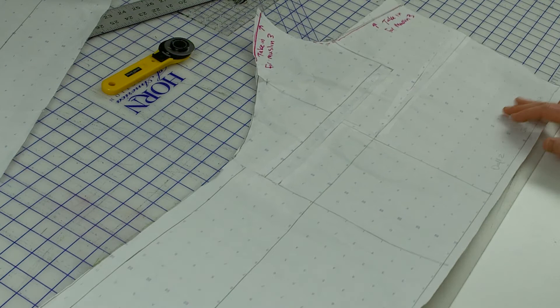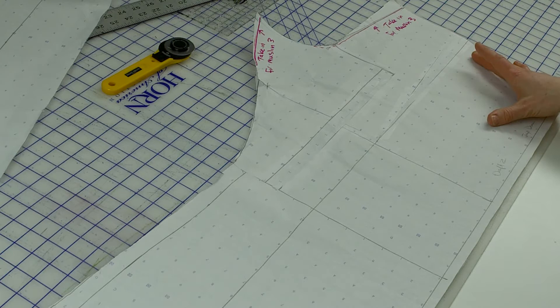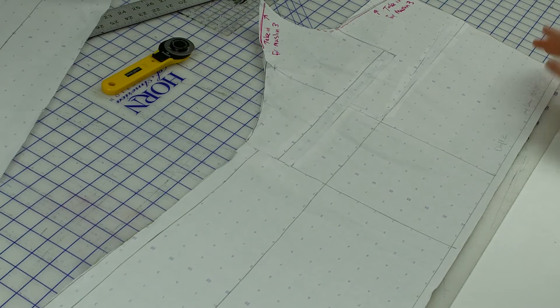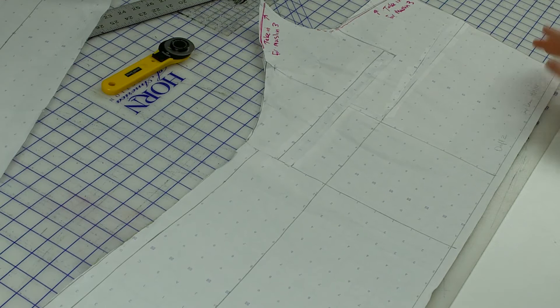All right, so here's an example of a pattern that I actually took the time to trace first before I started working on it. And you can see that everything looks nice and straight, and everything is on grain. I actually drew my grain line even with the grid on the gridded paper so everything would look nice and straight.